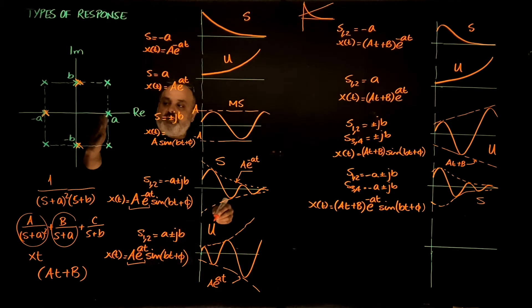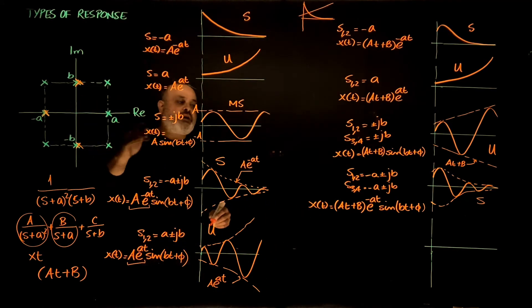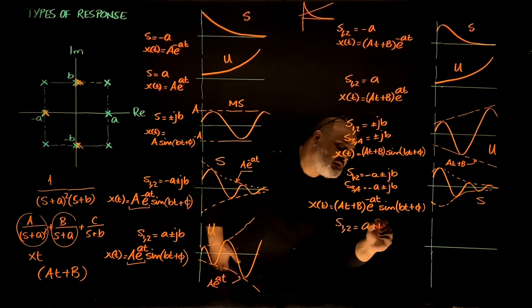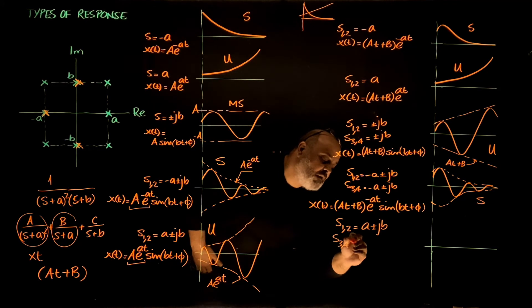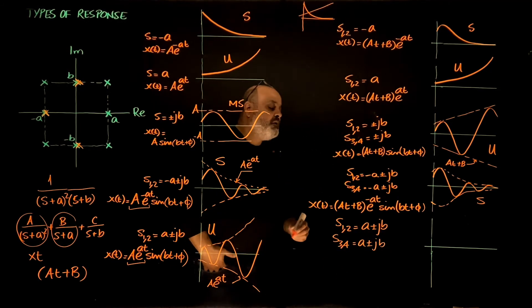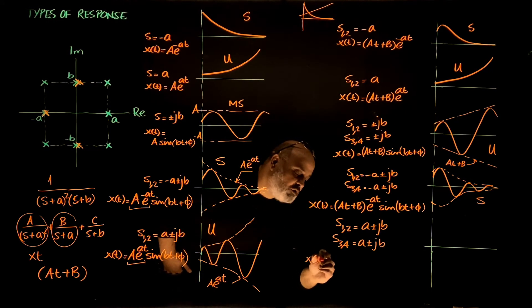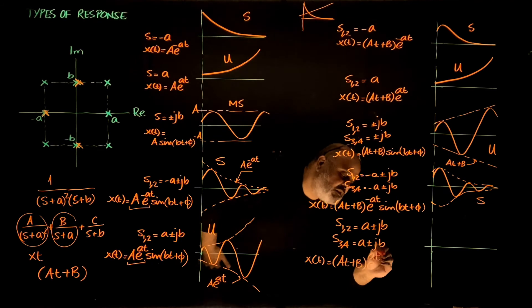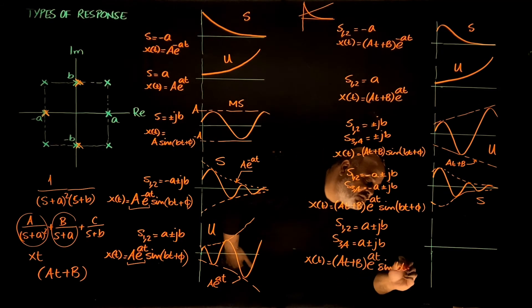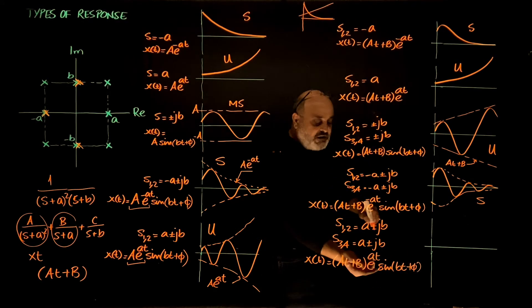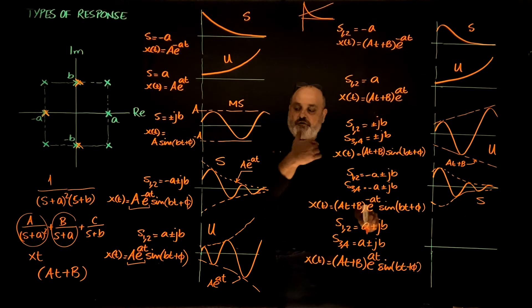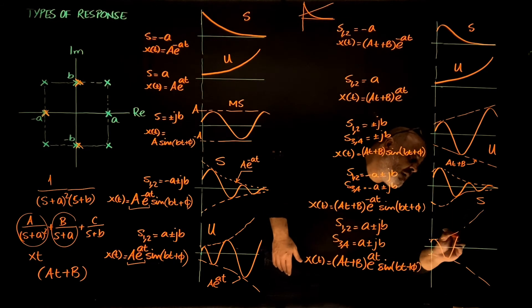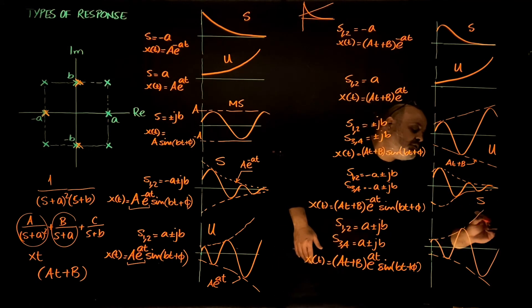For double complex roots in the right half plane — s₁,₂ and s₃,₄ both equal a plus or minus j·b — it's clearly going to be even more unstable. The response is the same form except the exponent is positive: amplitude times e to the power a·t times sine(b·t + φ). Both terms go to infinity, so the result goes to infinity even faster. We have an unstable sinusoidal response that grows to infinity.